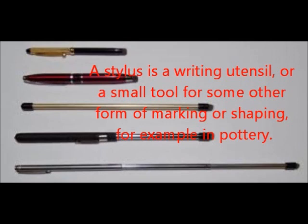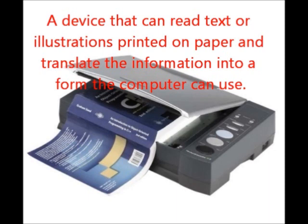Next is stylus. It's a writing utensil or a small tool for some other form of marking or shaping, for example in pottery. Next is scanning devices — optical scanners. An optical scanner is a device that can read text or illustrations printed on paper and translate the information into a form the computer can use.